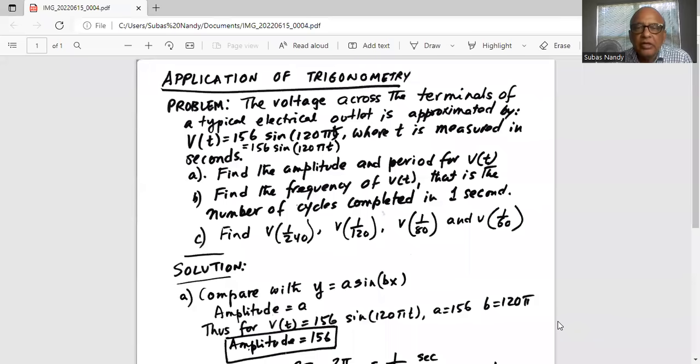Application of trigonometry problem. The voltage across the terminals of a typical electrical outlet is approximated by V as a function of t, where t is time, equal to 156 sine of 120 pi t, where t is measured in seconds.